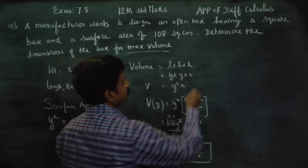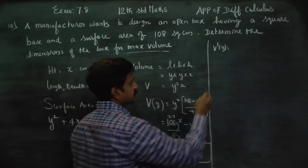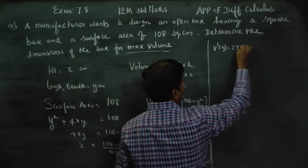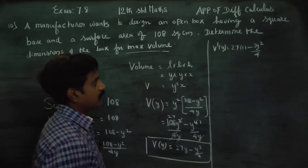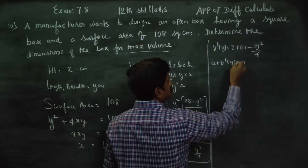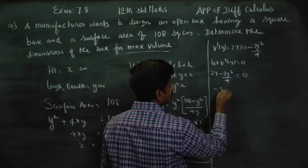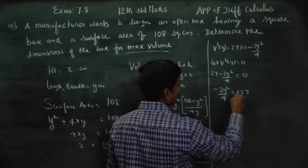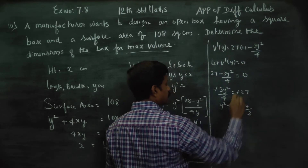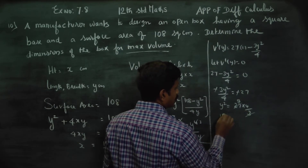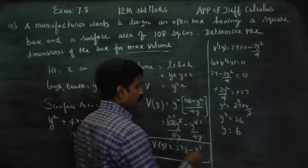For local maxima, we apply the first derivative test. Differentiating V(y): V'(y) = 27 minus 3y squared divided by 4. Setting V'(y) equal to 0: 27 minus 3y squared by 4 equals 0. Solving: 3y squared by 4 equals 27, so y squared equals 36, and y equals plus or minus 6. Since y must be positive, y equals 6.